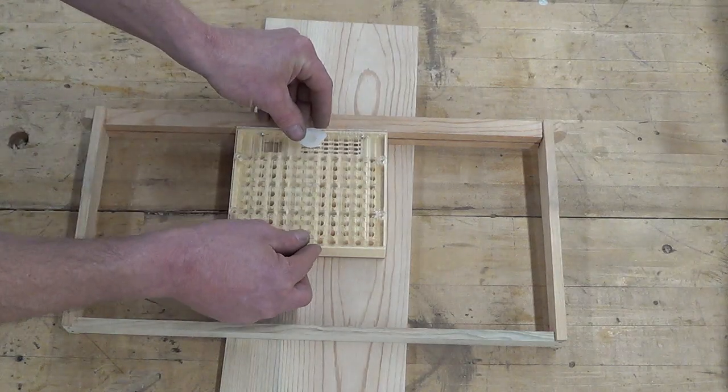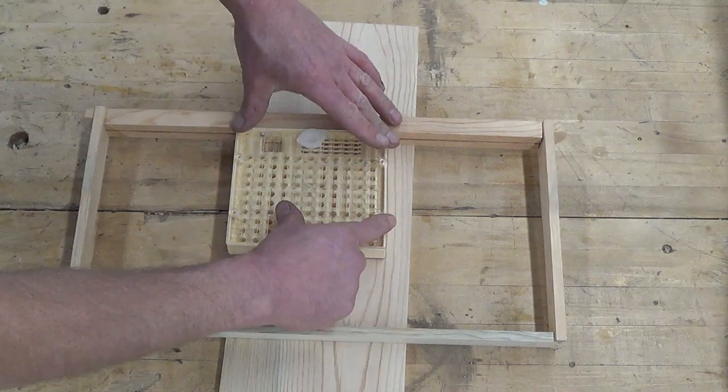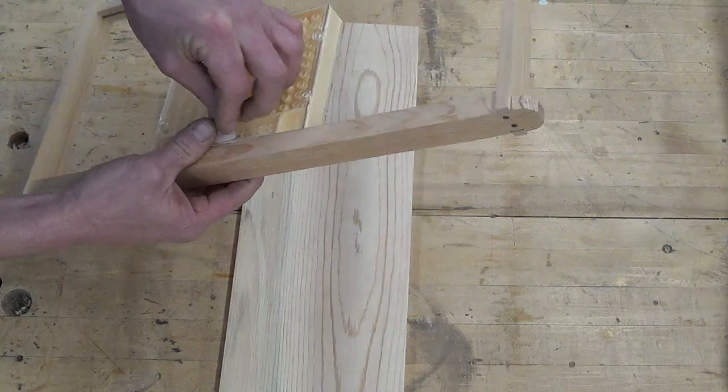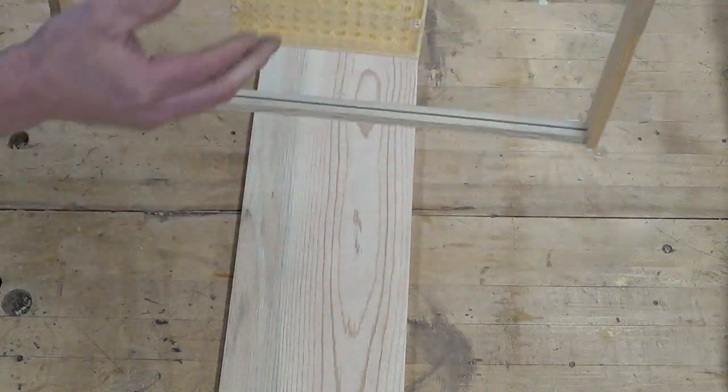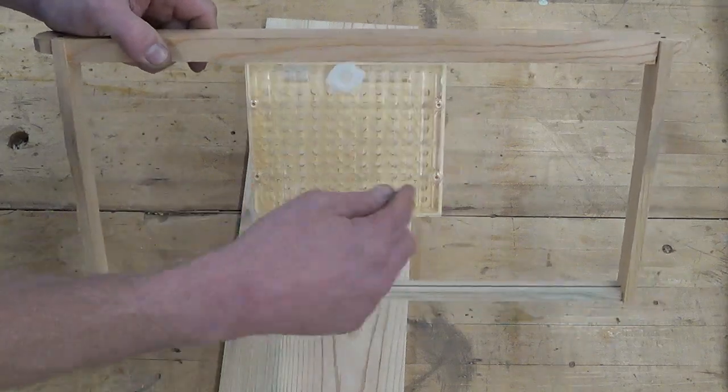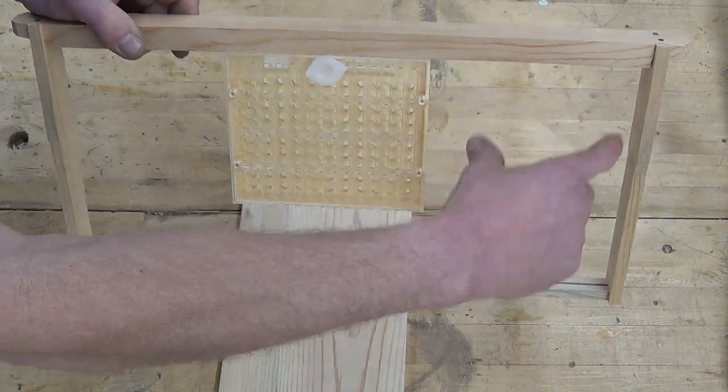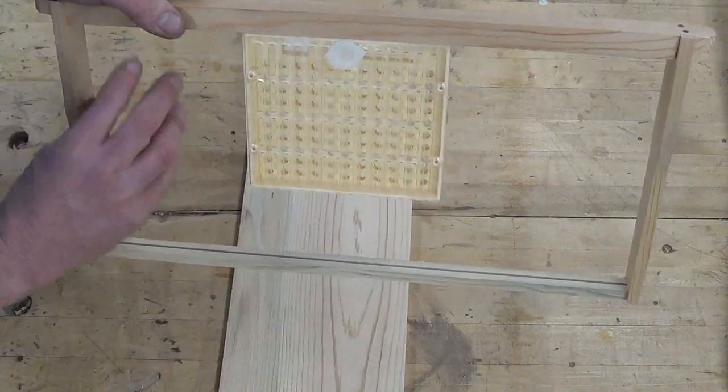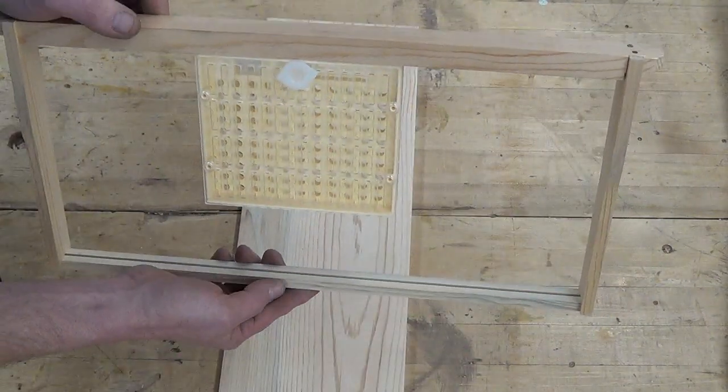I'll go ahead and put everything back where it belongs. Queen excluder side goes on the cup side here, and put my cap back in so I don't lose it. Now I'm ready to go. As I use this system, the bees will draw a comb out and fill this all in. After you use this once or twice this will be solidly filled in with honeycomb.